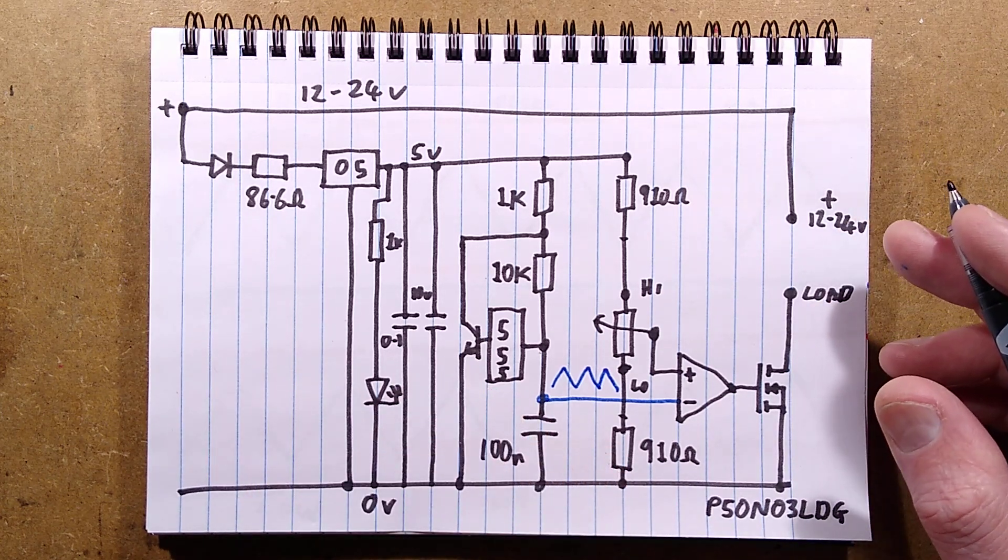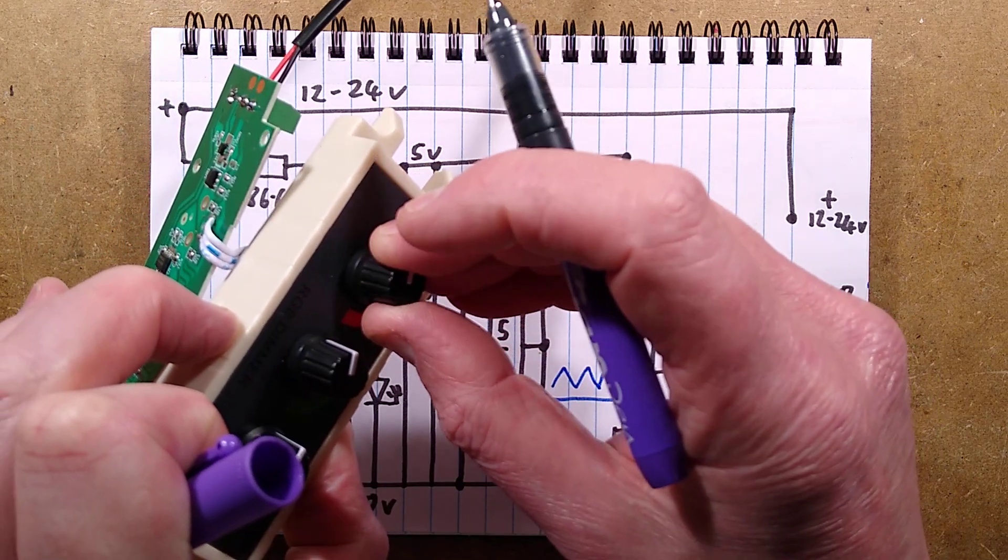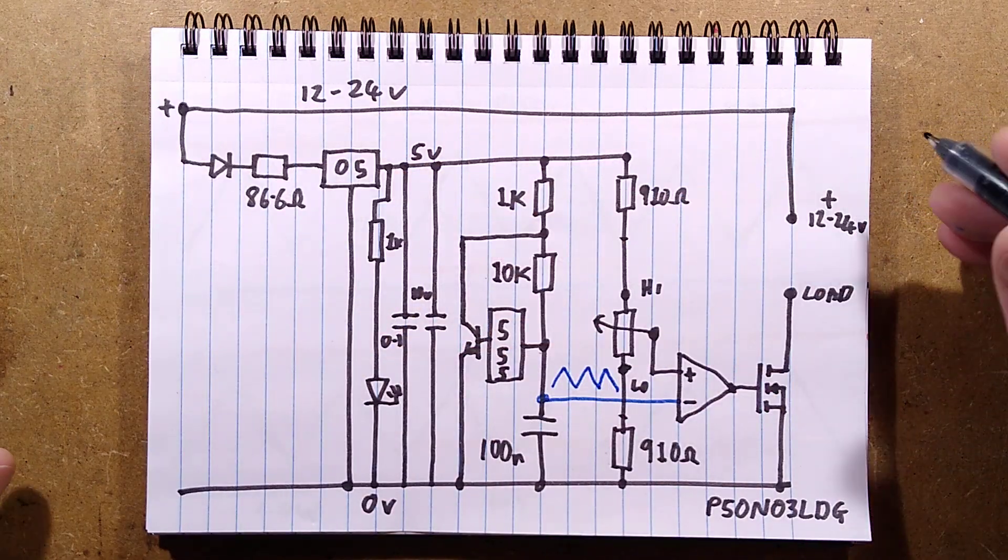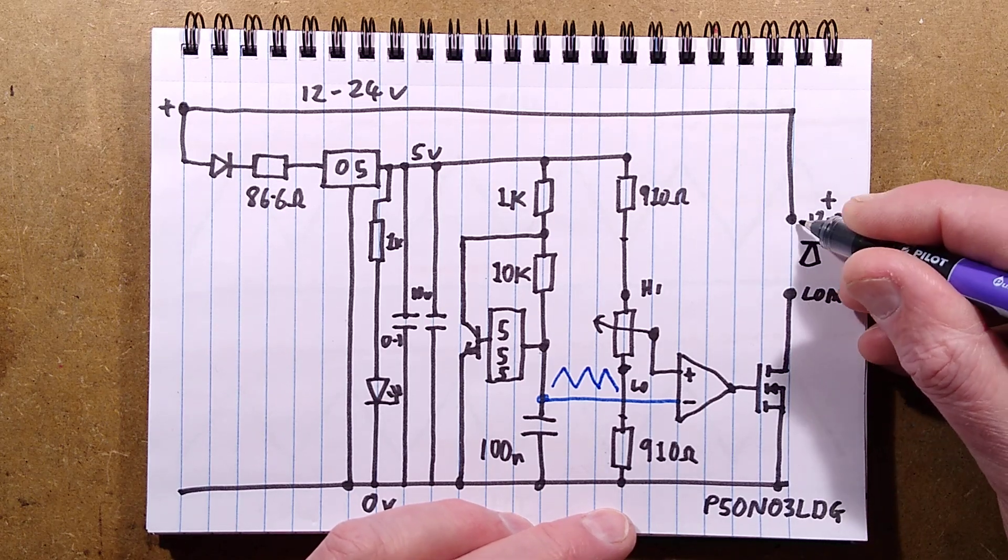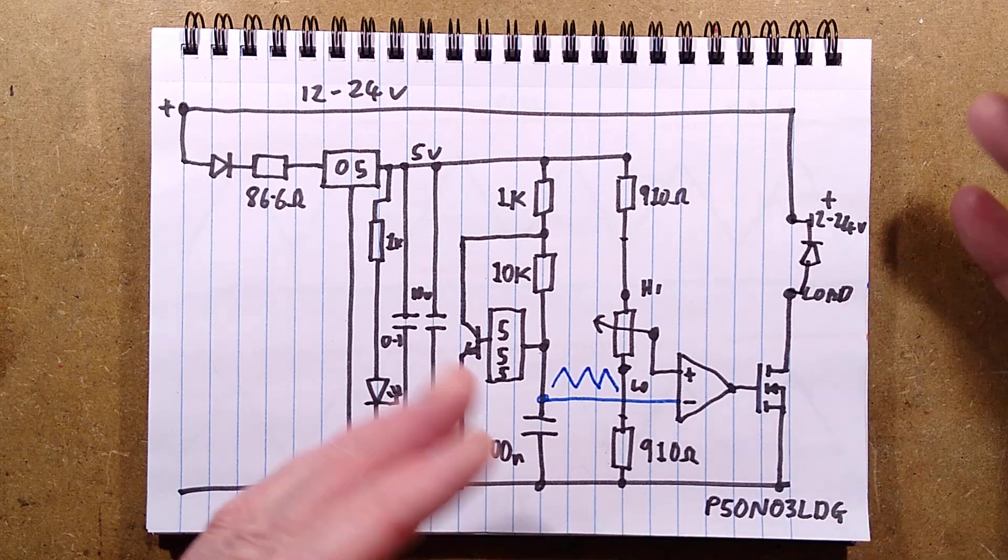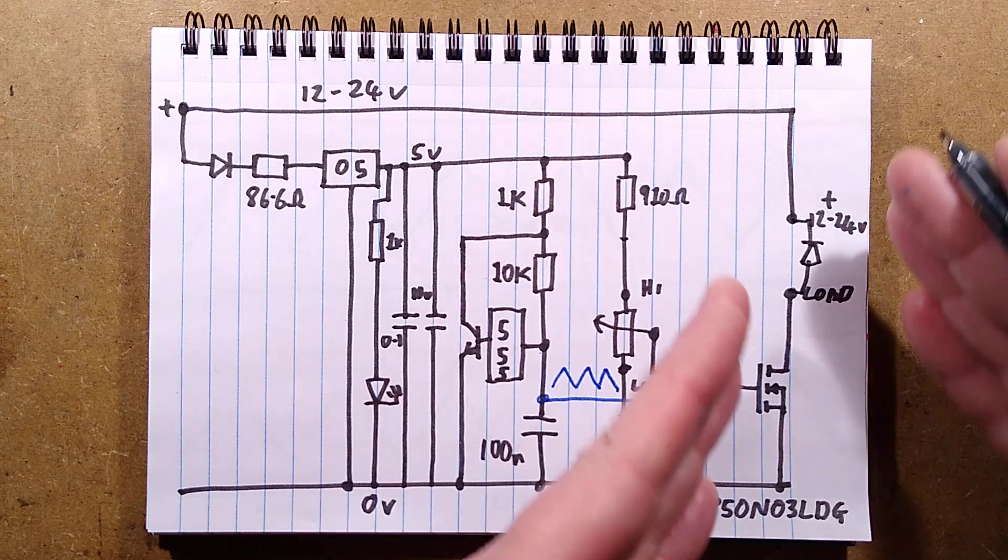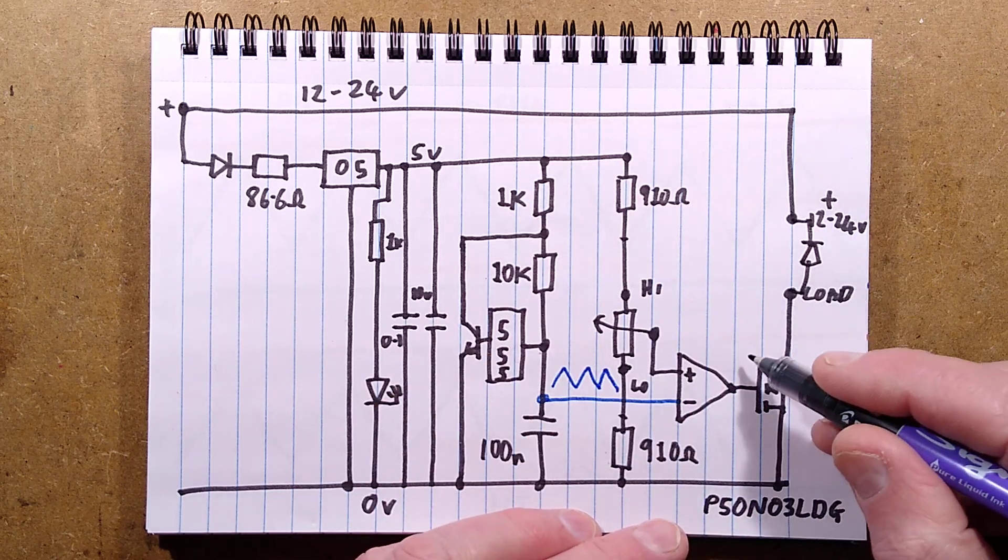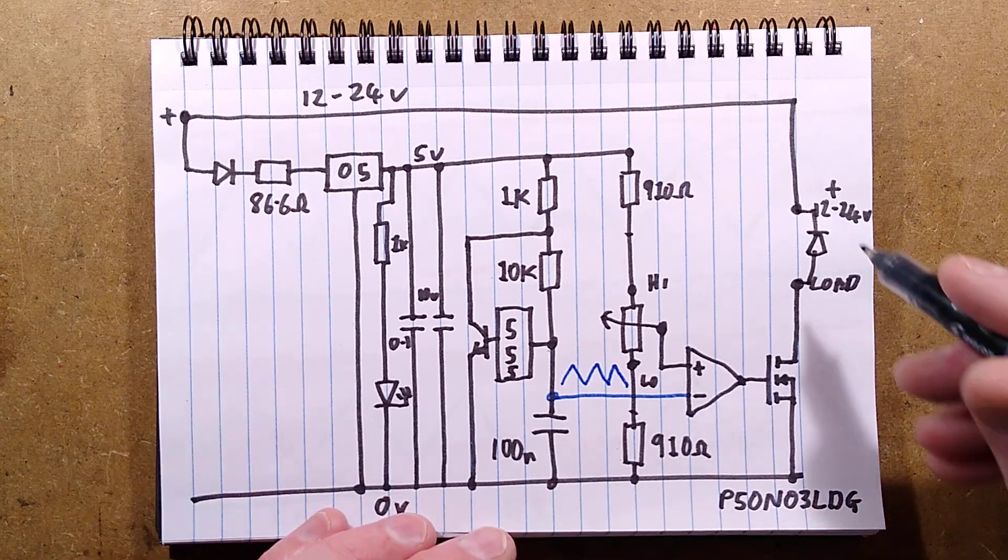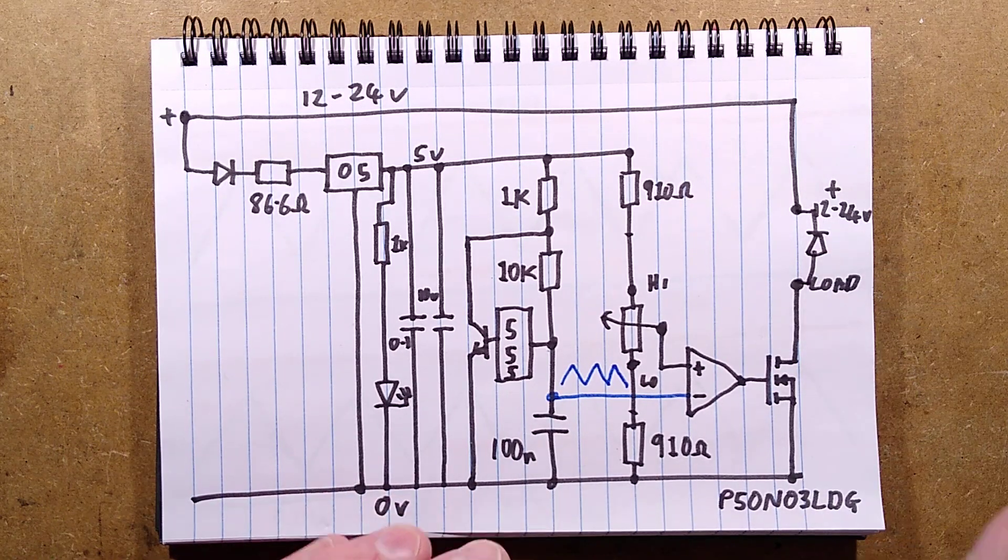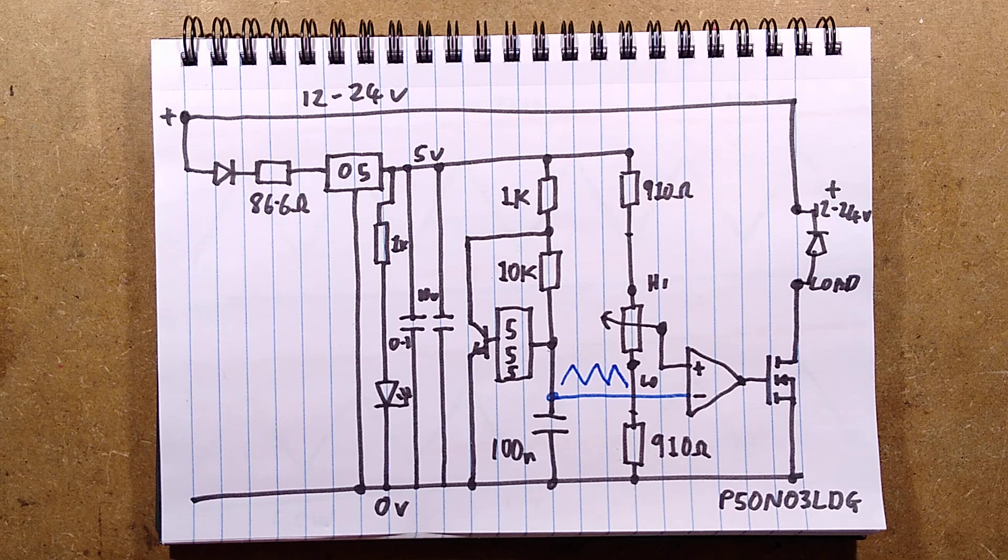However, if you want to control an inductive load, if you want to use this to control 3 motors, it's important to note, externally, you'd have to add a diode across each motor or whatever you connected, just to suppress the back EMF spikes, because this is designed to control LEDs. It's not designed to control inductive loads. But you could if you added that back EMF spike diode.